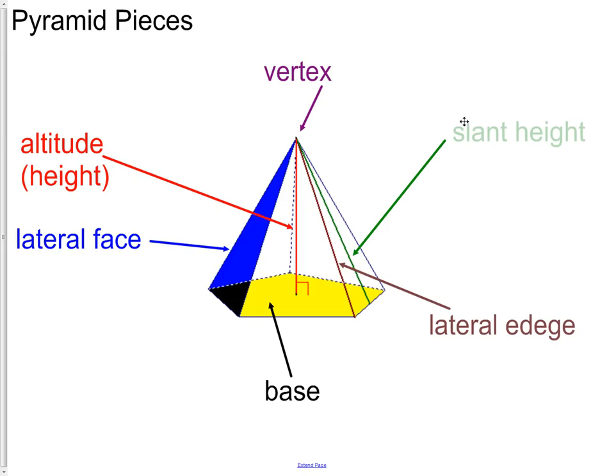And last, we have the slant height. Slant height is a new term for us. The slant height is going to go from the vertex down to the edge of the base. But now, instead of touching at a vertex, we actually are going to touch just on the side.